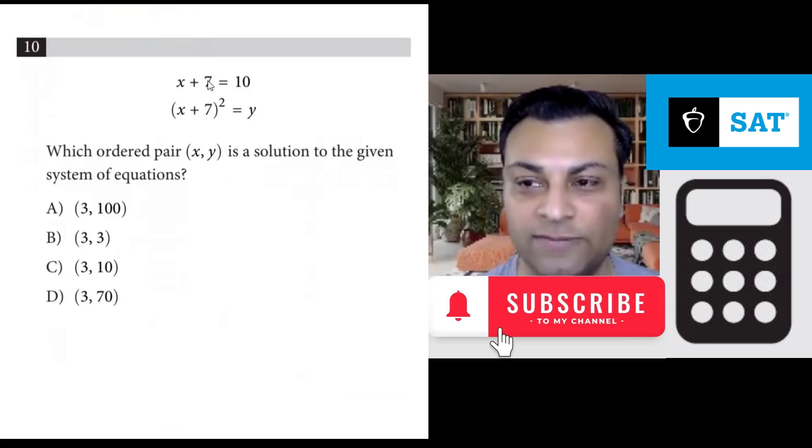Question 10: x plus 7 equals 10 and x plus 7 squared equals y. Which ordered pair (x, y) is a solution to the given system of equations?